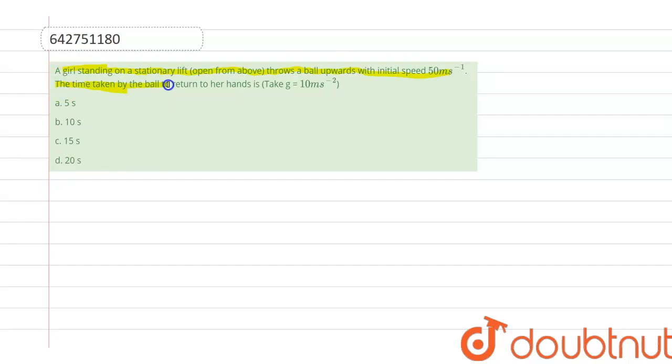So that is what we have to calculate. What is given here in the question? She throws the ball with a speed of 50 meters per second, so we can write initial speed of the ball, u, is 50 meters per second, and the acceleration due to gravity will be 10 meters per second squared.